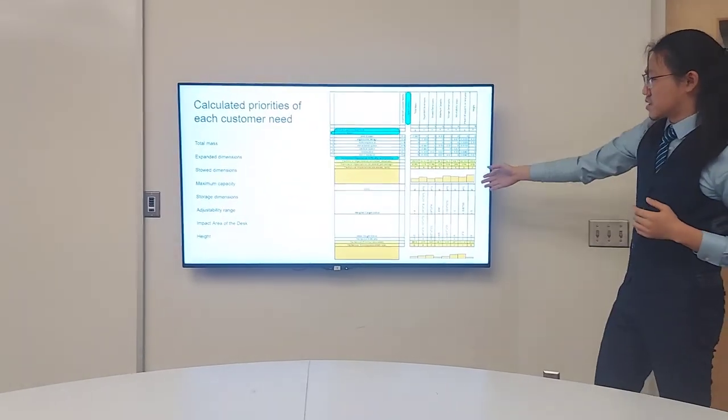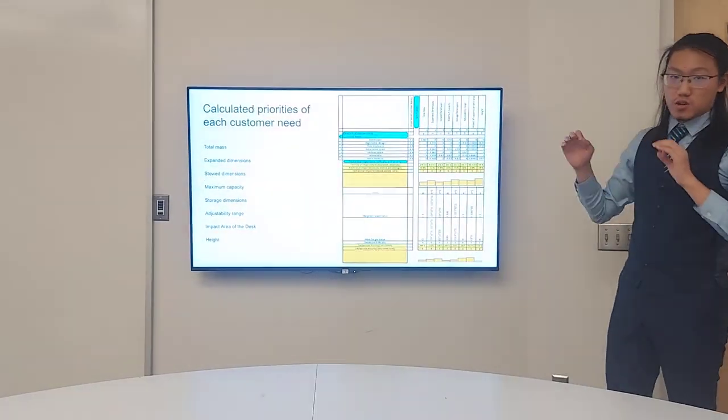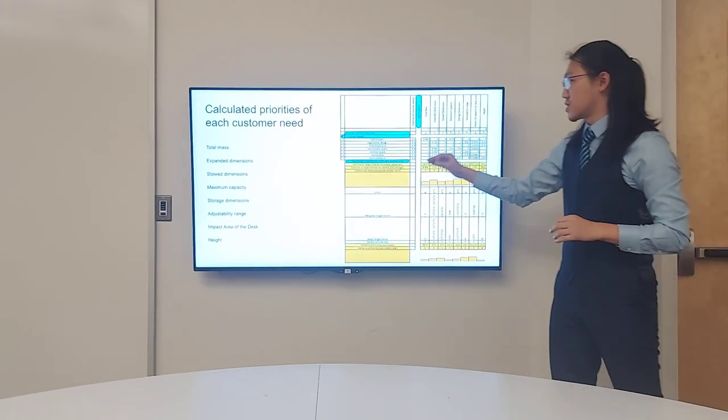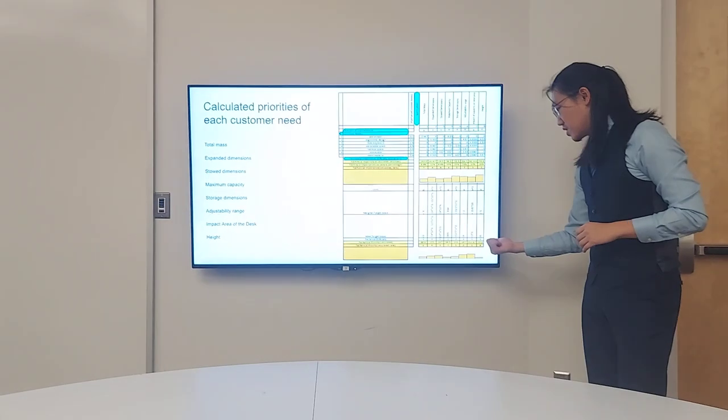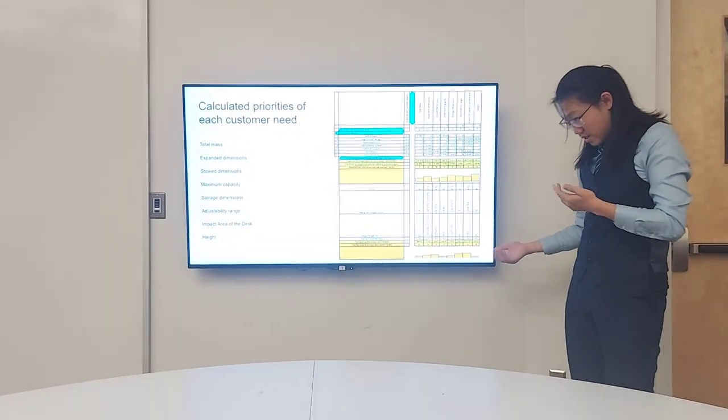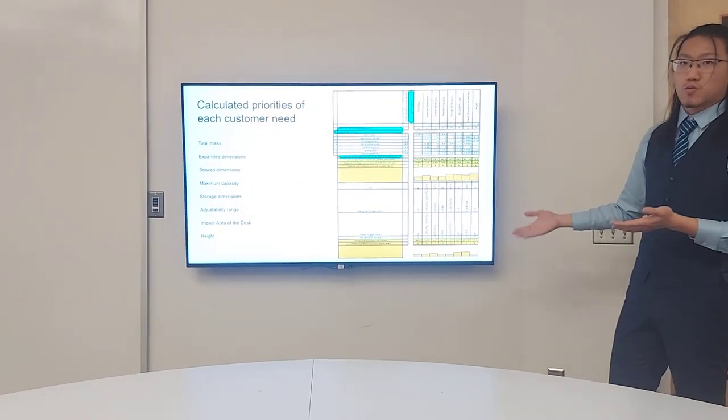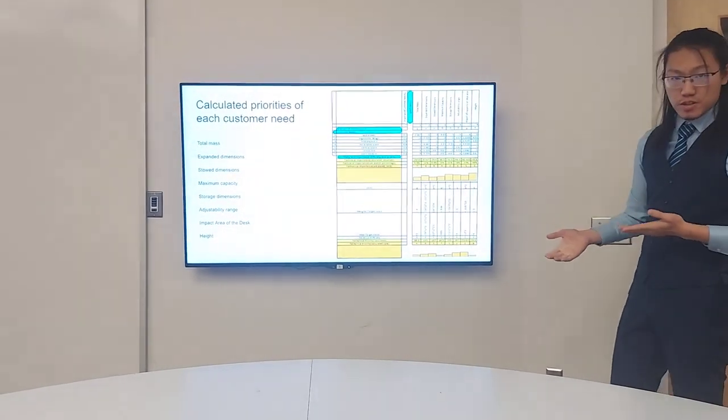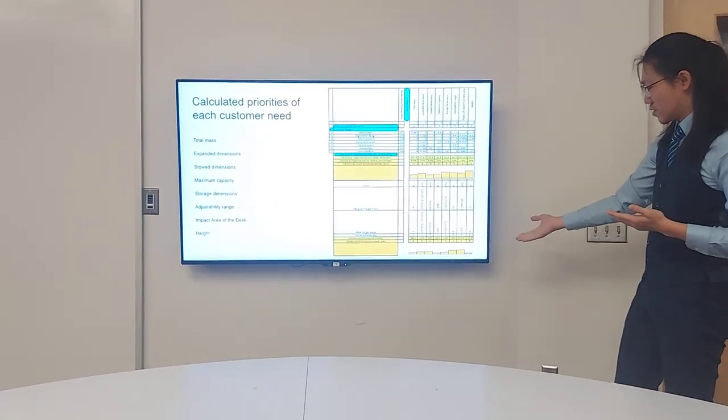From this chart, we can clearly see that height is the most important specification. That totally makes sense because every customer needs some degree of height. But on the contrary, it should be the least one on our prioritization list because height is just a one-dimensional measurement. We can stretch it out to make it longer or just build it taller. It's very easy to do.